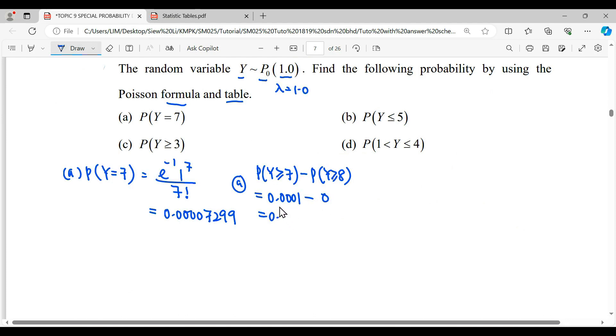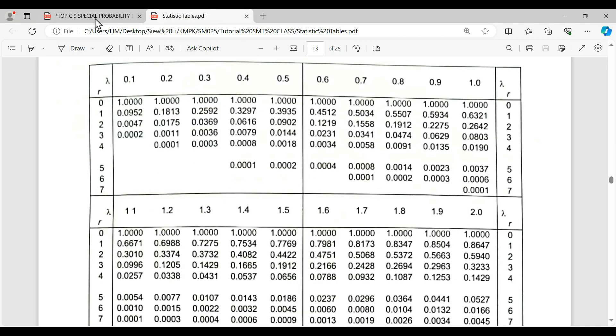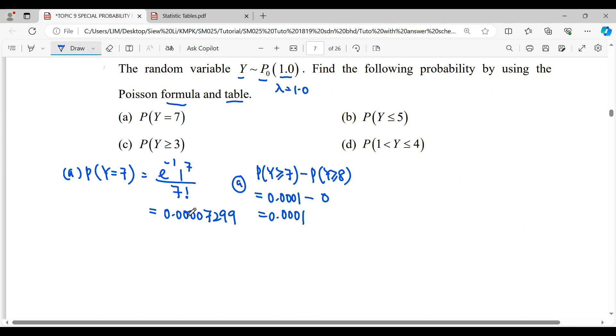So that's why it will give you 0.001. Of course, using a calculator and using the table will be different. Using the table we're having four decimal places, but if you're using the formula we can have more decimal places to get enough significant figures.